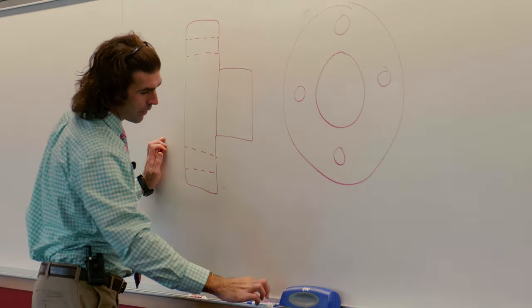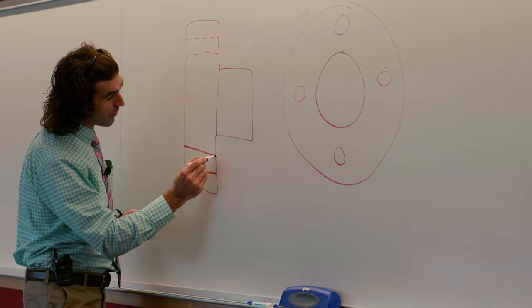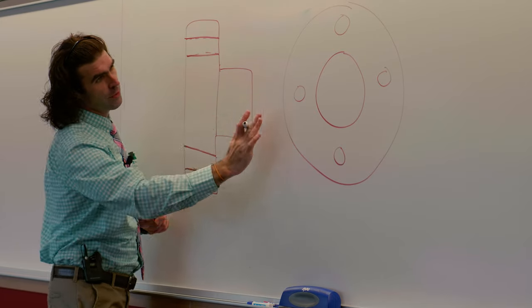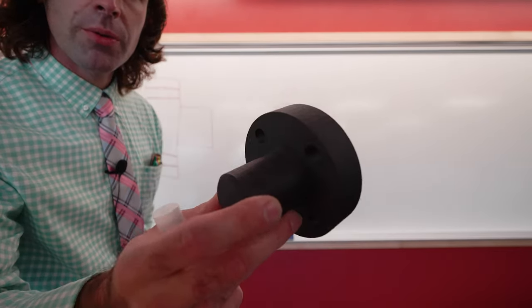We'll turn those into visible lines for the section. We can get rid of this. This is where the boss would contact the part and here's an example of what I'm talking about.